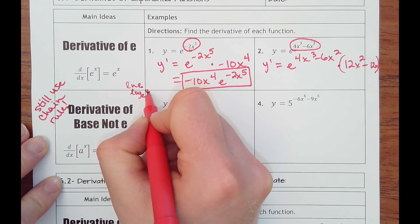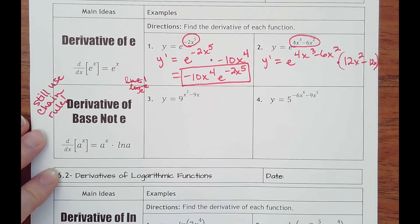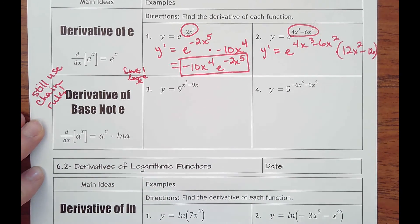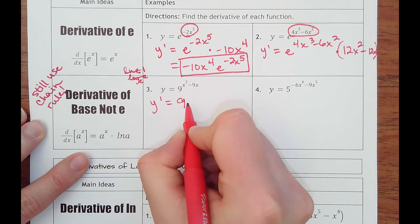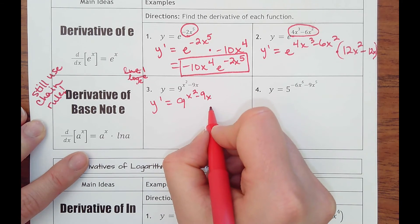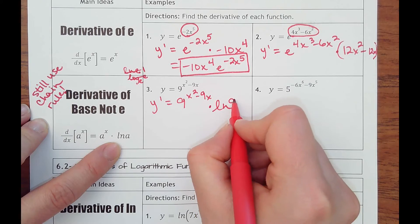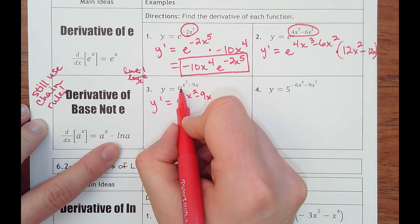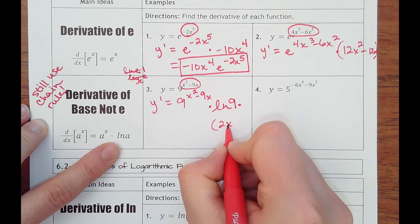So it's saying e to what power makes e? That's one. So that's why it's not even necessary to write, because it's just times a one. But anyway, so if I were to take derivative of this, I would write it again: 9 to the x squared minus 9x power, and then times natural log of the base, which is 9, but still don't forget to do the chain rule, which is times 2x minus 9.